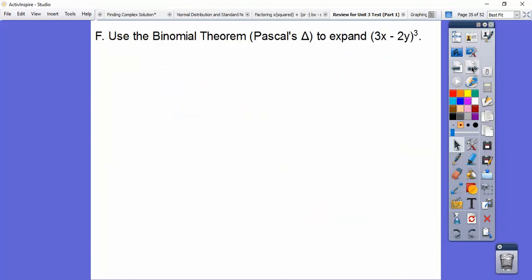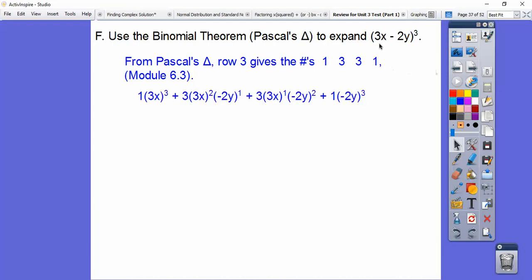I used the binomial theorem, and we did it by Pascal's triangle to expand (3x - 2y)³. From Pascal's triangle, which is module 6-3, row 3 gave us 1, 3, 3, 1. If you don't know how to do Pascal's triangle, go back and look in section 6-3, about in the middle of the lesson when we started building that Pascal's triangle. We're going to use those numbers to put in front of these. All of these powers add up to 3. It's in row 3 because of this 3 right here. Look, 2 plus 1 is 3. 1 plus 2 is 3.